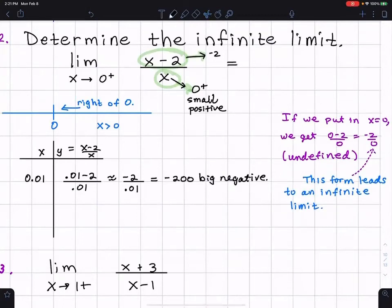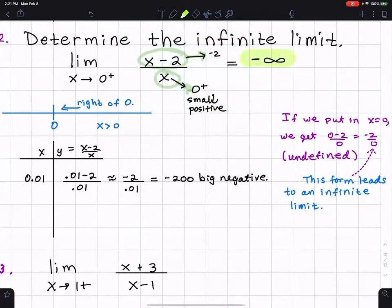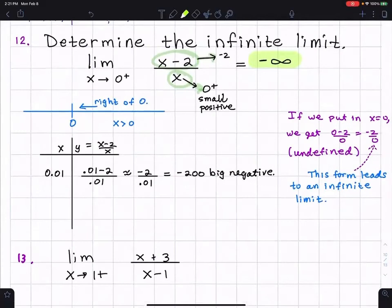And because of the form where it comes out to be negative two divided by zero, it's undefined, it's not a number. Because of that, I know it's going to be infinity. The only question really was: is it positive infinity or negative infinity? Well, because it's a negative divided by positive, it's negative infinity. And really, the directions even tell us it's an infinite limit, so a lot of it was just: is it positive or negative?